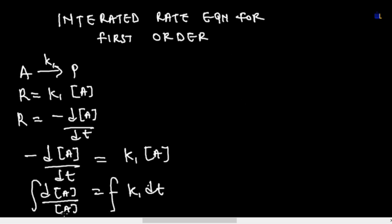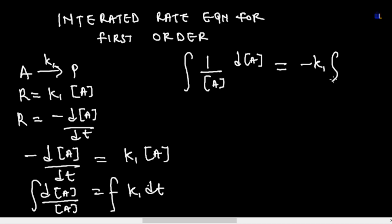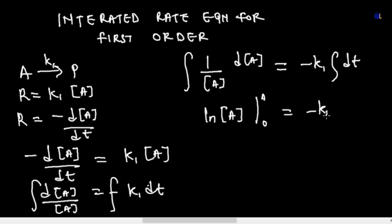Now we are going to integrate both sides. This can be written as the integration of 1/[A] d[A] equals the integration of -k₁ dt, where k₁ remains constant. The integration of 1/[A] d[A] gives us ln[A], evaluated from the initial value [A]₀ to the final value [A]f, and this equals -k₁t, evaluated from initial time to final time t.